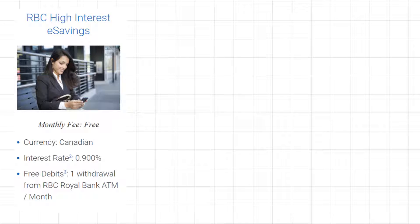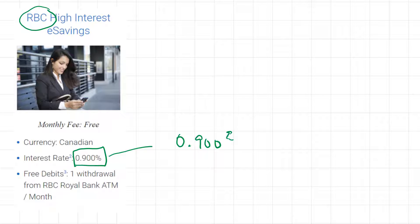In the last few examples it was about interest charged to you because you're borrowing money. In this example, RBC — Royal Bank of Canada — is advertising a high interest savings account with an interest rate of zero point nine zero zero percent per year. That's a very low percentage compared to the three point two nine percent for a mortgage. So interest rates can be paid to you when you put money into a savings account, or you have to pay it when you borrow money.